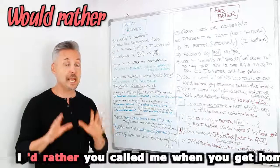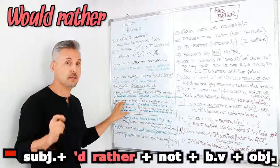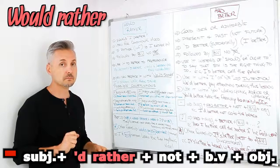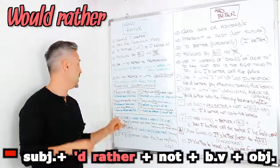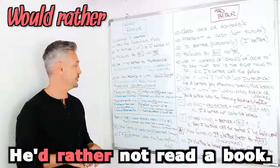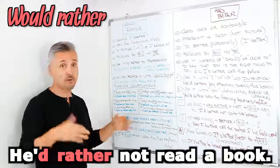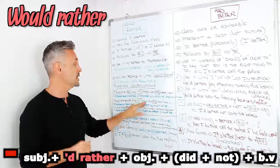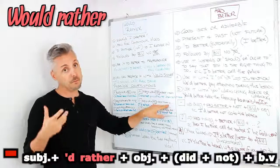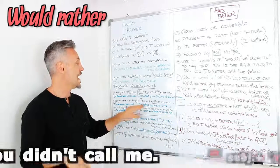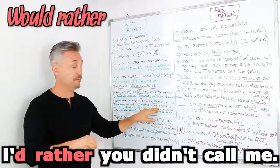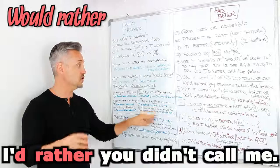Now let's take a look at the negative sentence. We need: subject + 'would rather' + not + base of the verb + object. The example is: 'He'd rather not read a book.' For the other type of negative construction, the formula is: subject + 'would rather' + object + past verb form + the rest. For example: 'I'd rather you didn't call me' — where 'didn't' is the past tense of 'do not'.